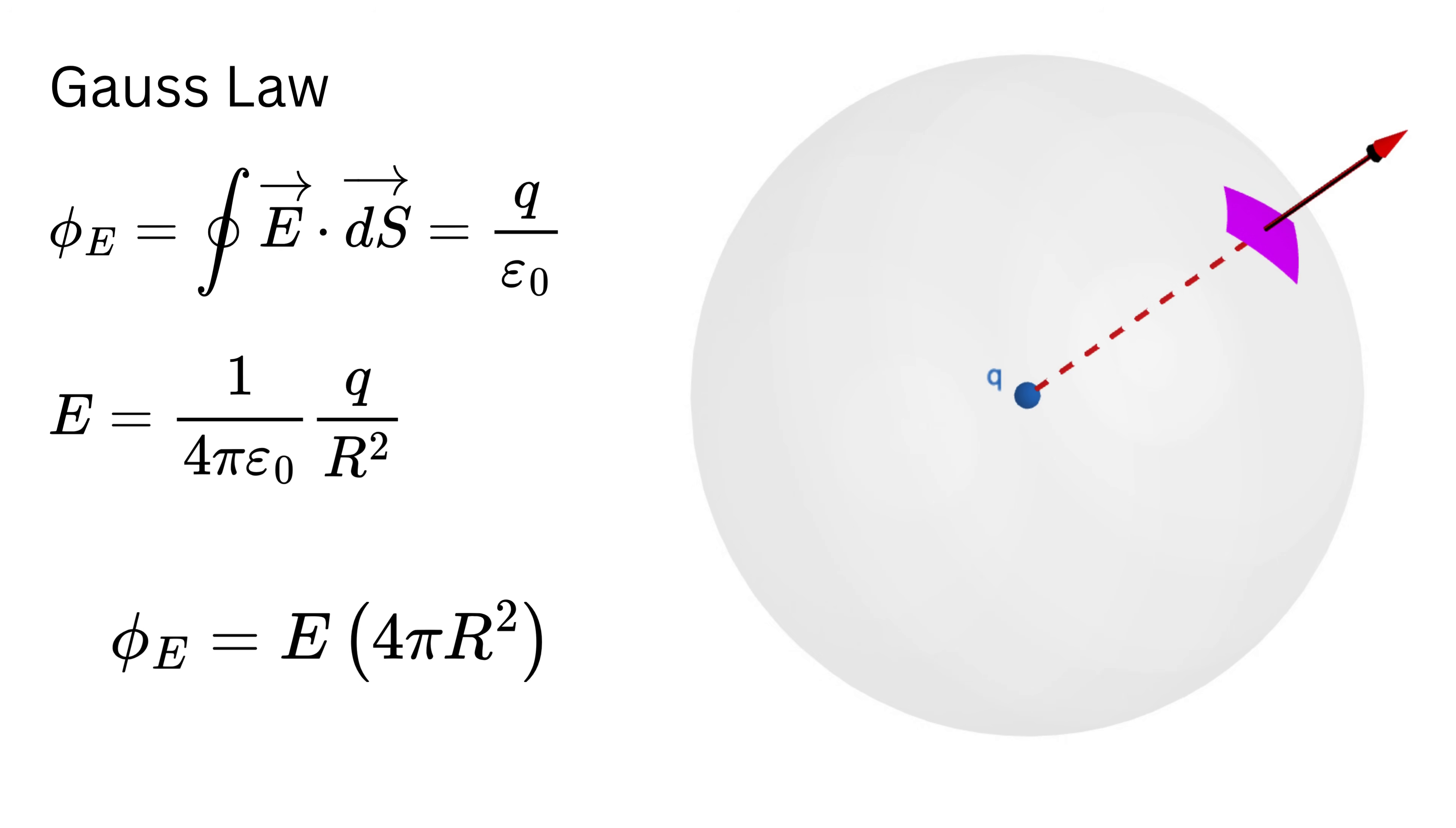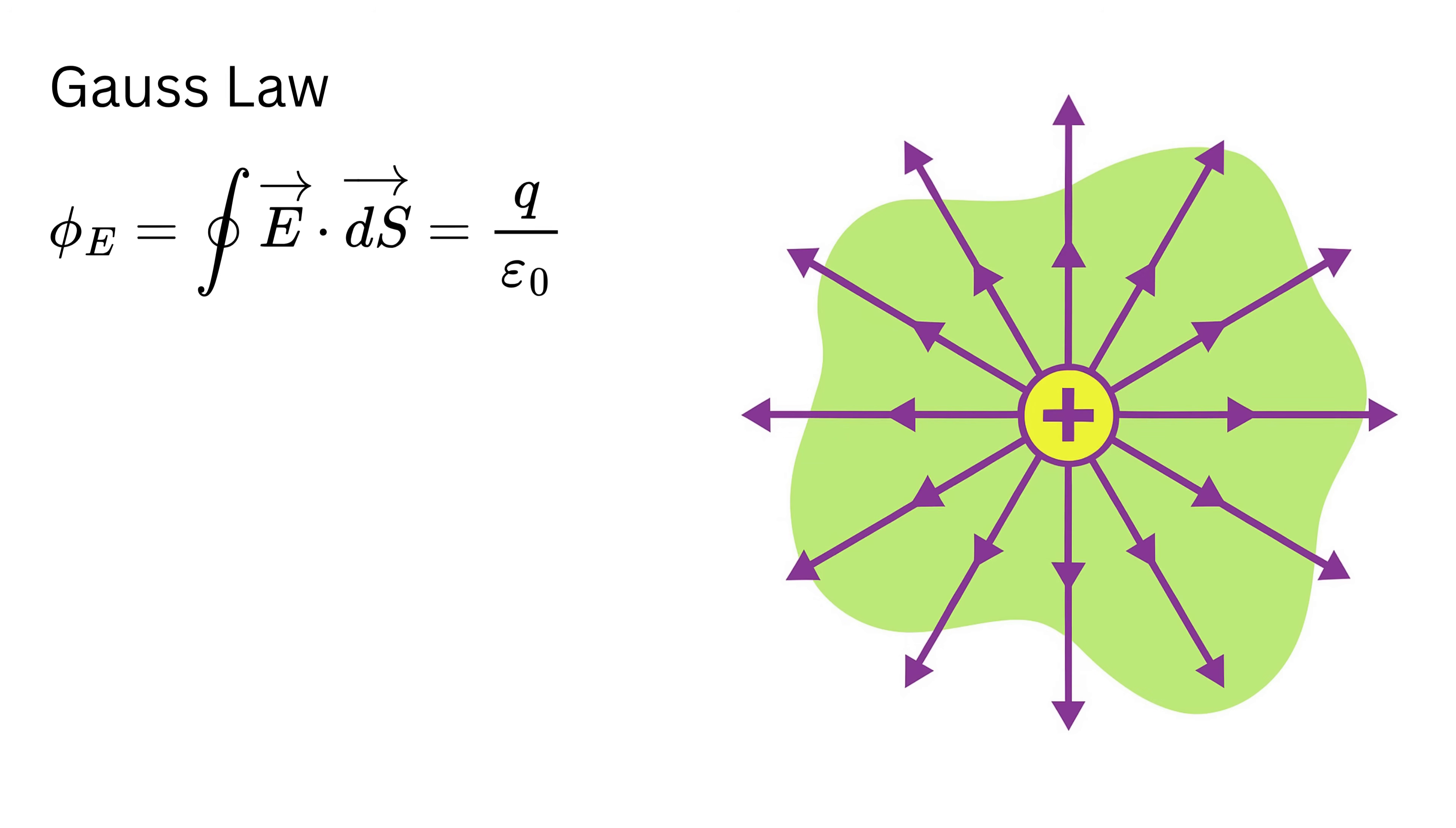Now substitute the value of E from Coulomb's Law like this. Hey, the pi and r squared terms cancel out, leaving total flux equals q divided by epsilon naught. This simple result shows that for any closed surface enclosing a point charge q, the total electric flux depends only on the charge inside and not on the size or shape of the surface.